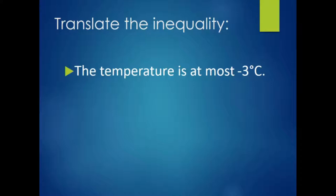This first sentence states: the temperature is at most negative 3 degrees. The key word here is 'at most,' and translating this using the appropriate inequality gives us less than or equal to. We're letting T stand for the unknown temperature, which is less than or equal to negative 3.